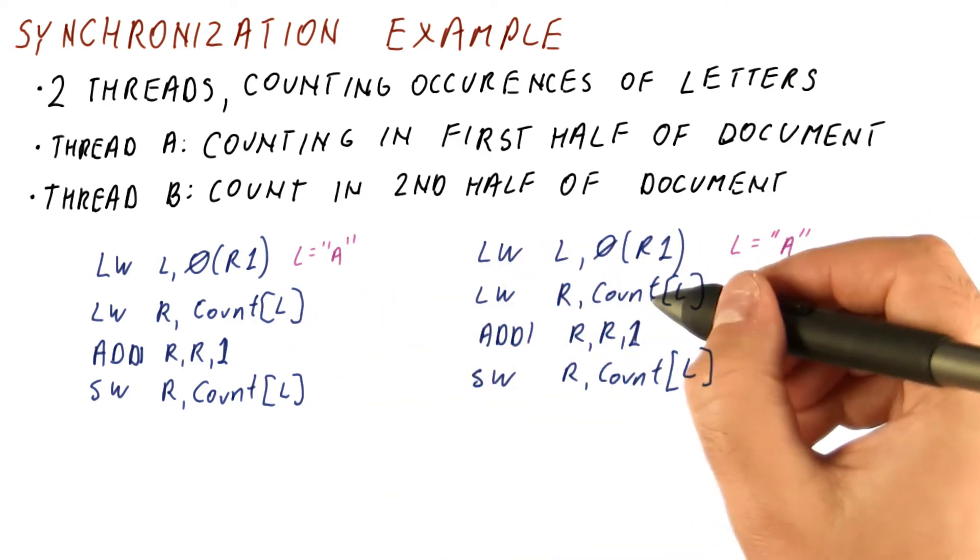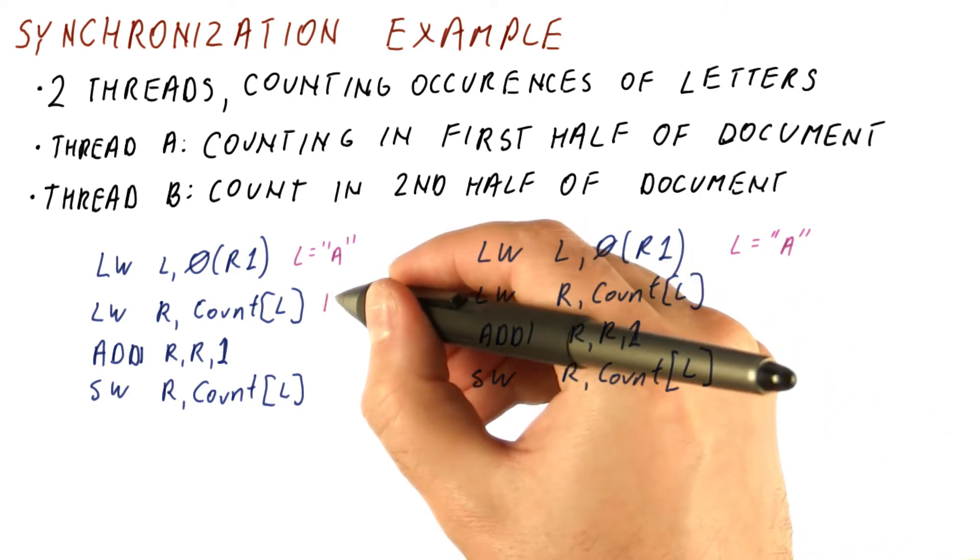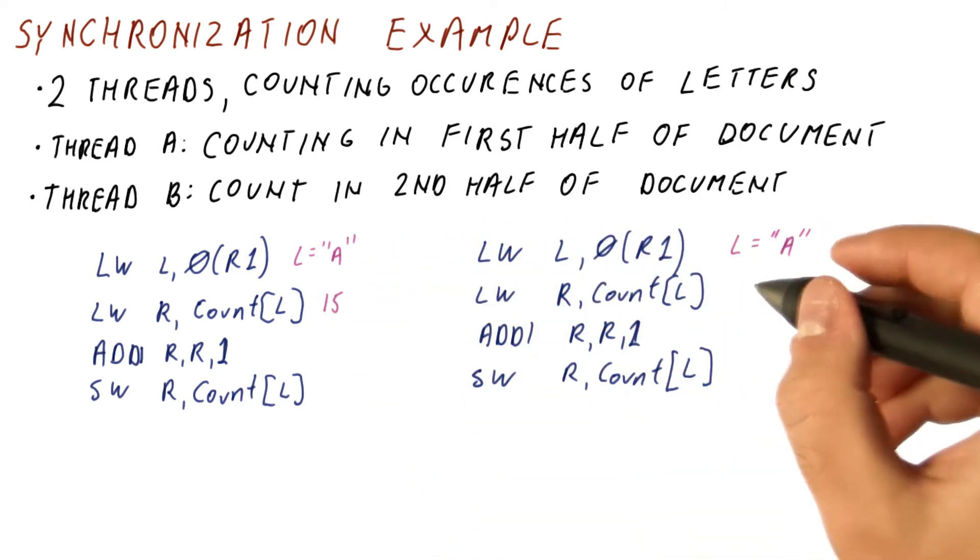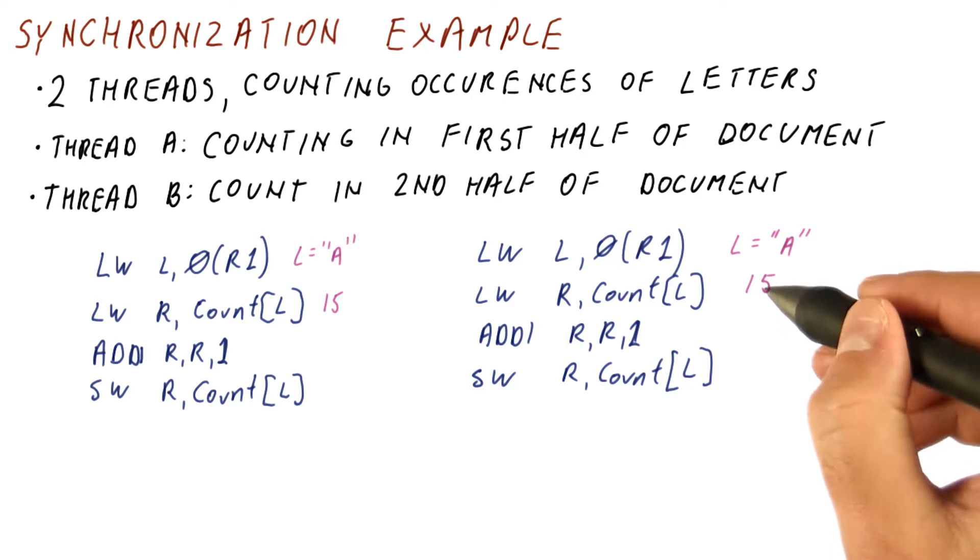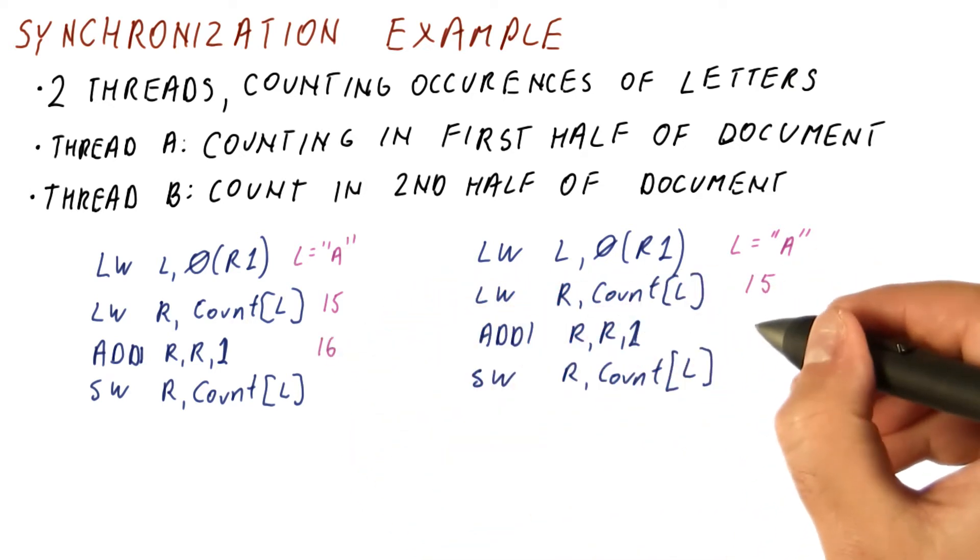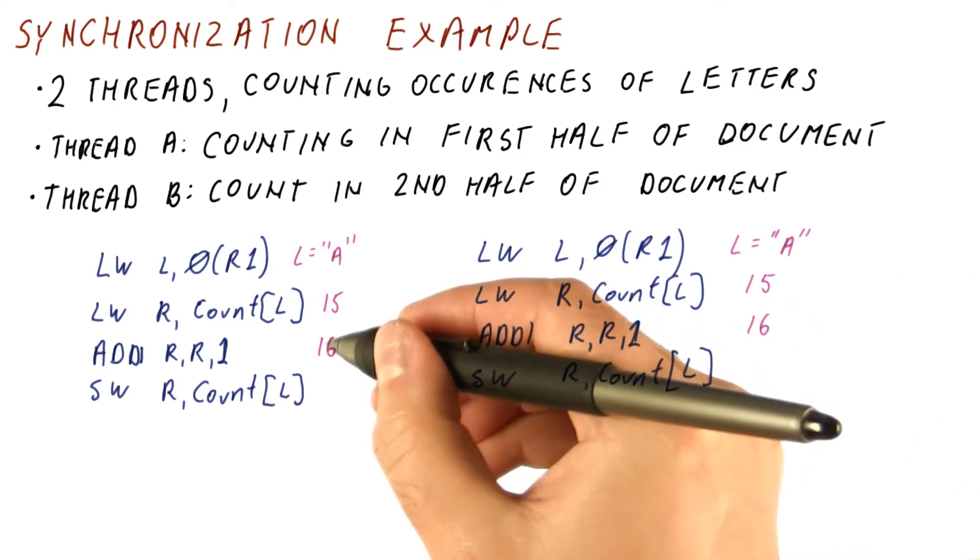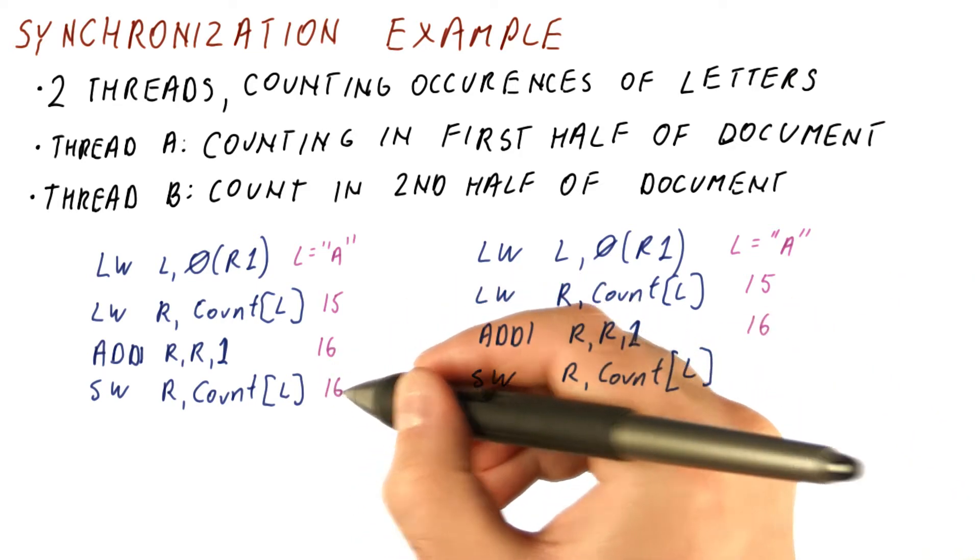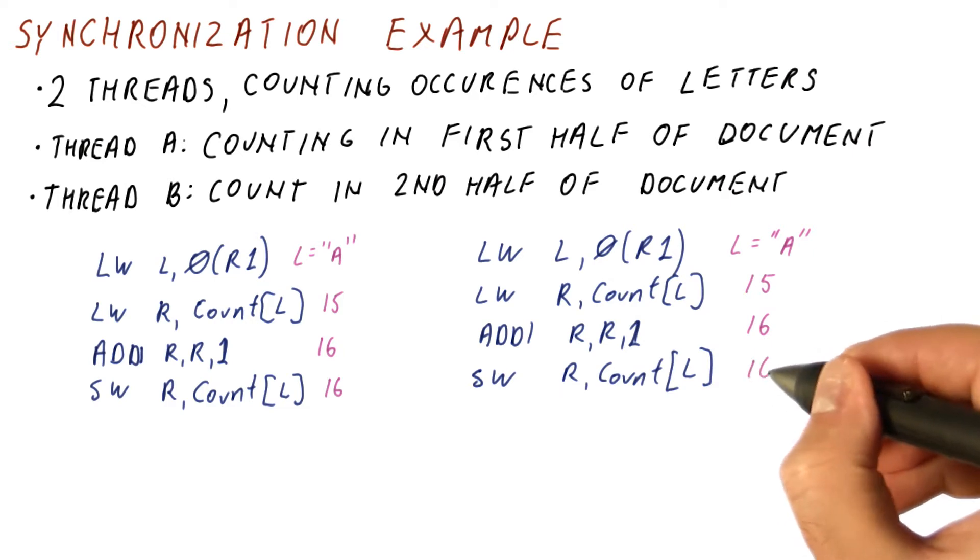Then what happens is they both try to load the same element from the count array. Let's say the count was 15. So this one will load 15, and this one will load 15. Now we add one, and we get 16, and we do the same here. Finally, we store 16 to memory, and here we also store 16 to memory.